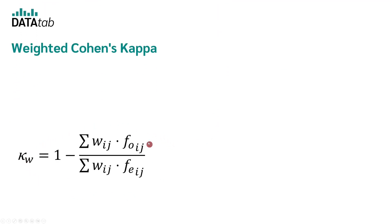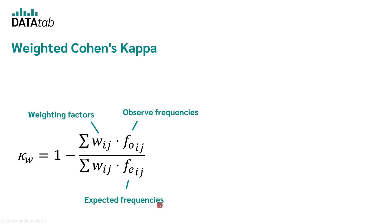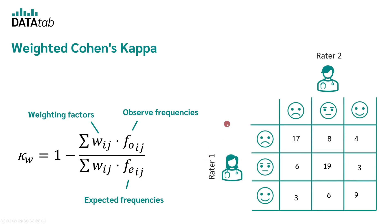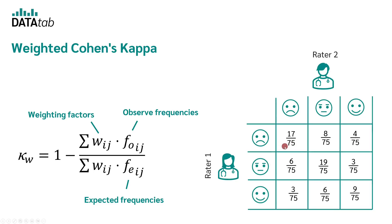What is the formula for the weighted Cohen's kappa? The weighted Cohen's kappa is calculated using a formula with weighting factors, where FO are the observed frequencies and FE are the expected frequencies. Instead of frequencies, we could also use probabilities — the observed probabilities PO and the expected probabilities PE. We've just calculated the observed frequencies in our table. If we divide each frequency by the number of patients — in our case 75 — we would have the observed probabilities.